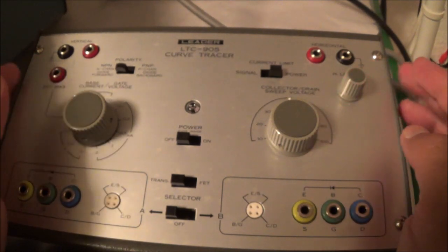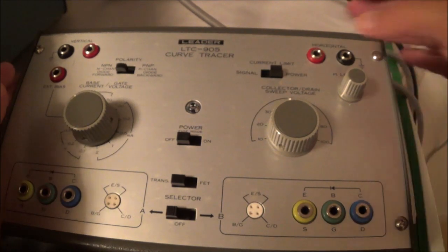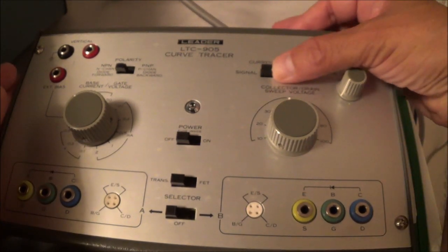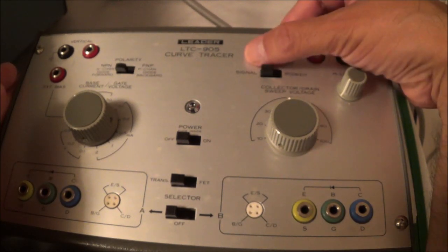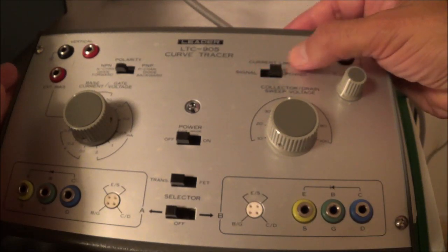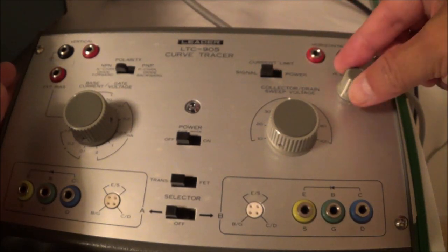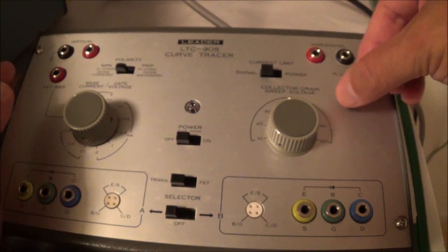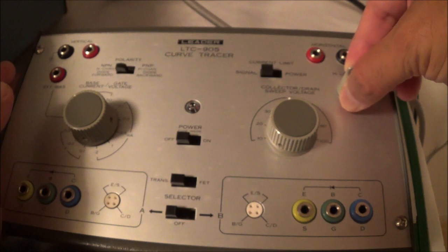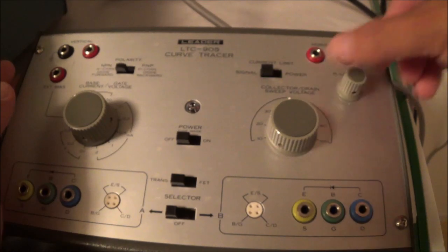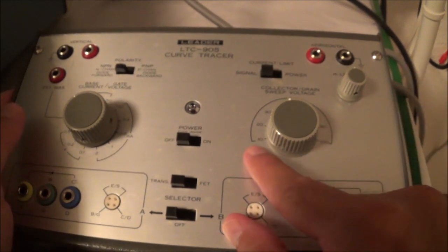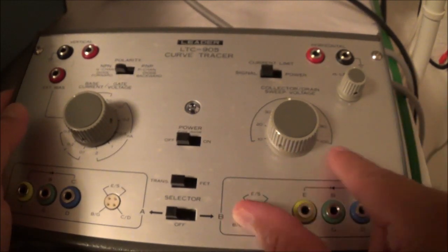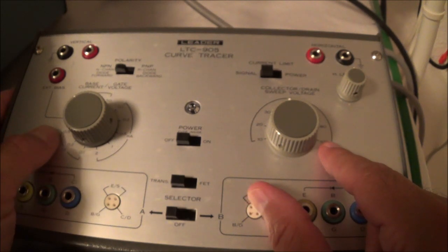Here we can switch between signal or signal is low power and power transistors. Horizontal length here, I'm going to have to check the book for that. I think it's probably for accurate readings you can adjust the trace width. The sweep voltage here goes all the way up to 100 volts.